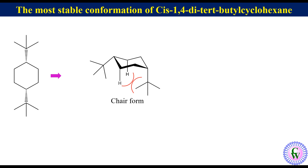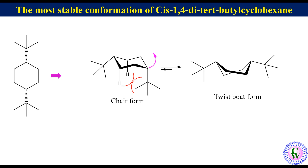This makes the chair conformation very unstable. To avoid this strong repulsive interaction, the ring carbon with the axial tert-butyl group moves up, and the ring acquires a twist-boat conformation, where there is no such interaction as the two tert-butyl groups are pseudo-equatorial. Thus, the most stable conformation of cis-1,4-di-tert-butyl cyclohexane is the twist-boat conformation.